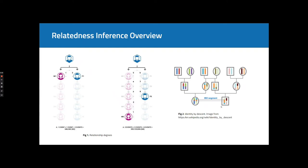Close relatives will have more identical chunks with higher total and average lengths. Therefore, we can predict relationship degree from that information.